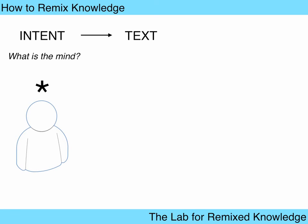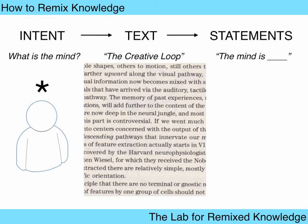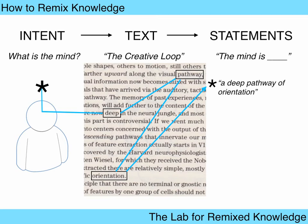You select a source text, like The Creative Loop. And then you create your statements using a coherent form such as 'the mind is blank,' where you fill in the blank with your own remix. Rapidly scanning the page, you connect words to create the statement — for example: the mind is deep pathways of orientation. And you do many of these remixes.